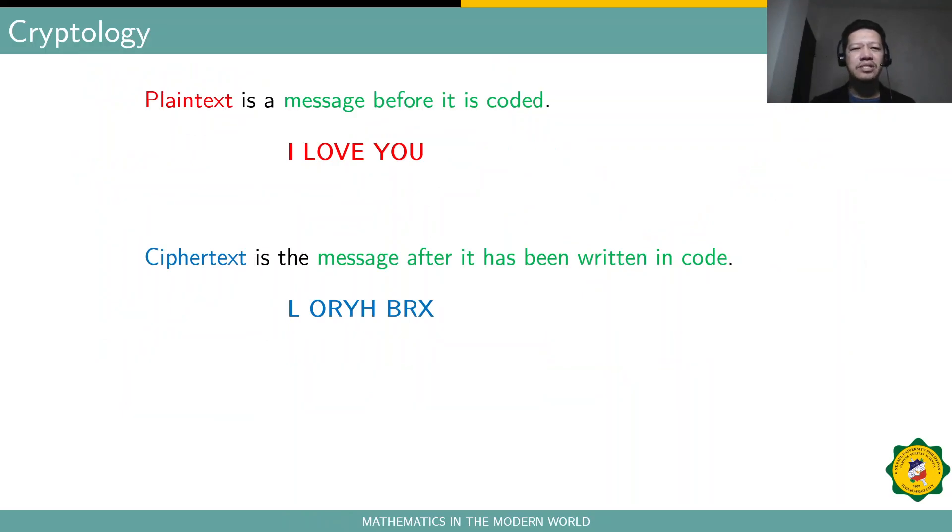Like, for example, there's a basic term, plaintext. Plaintext is a message before it is coded. Like, for example, you want to send, I love you. So, you can actually encode, encipher, or encrypt this plaintext, I love you, as L-O-R-Y-H-B-R-X. We call this the ciphertext. This is a message after it has been written in codes or ciphers using a particular kind of cipher.